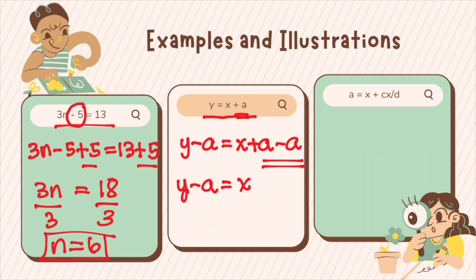x is now on its own on one side of the equation. You may want to put the subject on the left-hand side. So it will be the same as x equals y minus a. But this is not necessary.